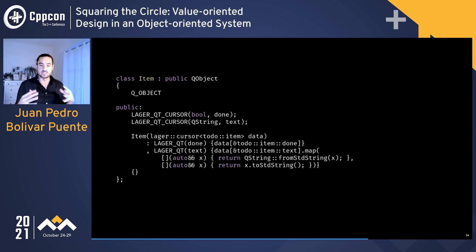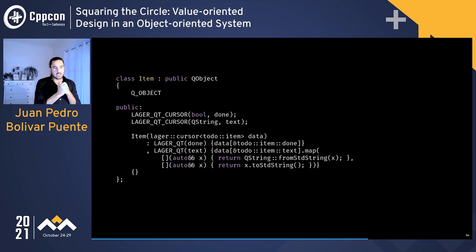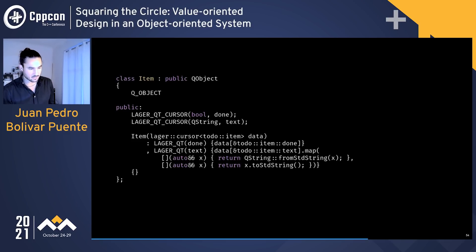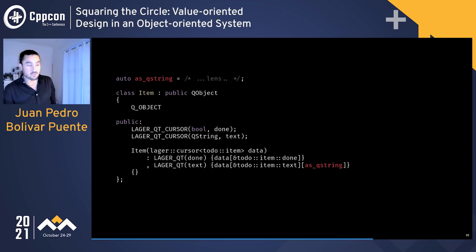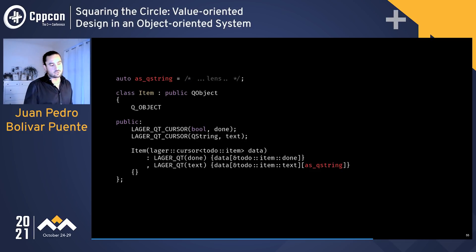This constructor logic is all boilerplate, so the library provides macros that automatically define Qt properties and all associated boilerplate. The only thing we need to do in the constructor is describe how data flows through the application — how from the root or parent data we get to the child data. The library also provides a dot-map function on transducers for very common mapping operations, and you can also define a lens for type conversions like QString to std::string and use it directly with square brackets.